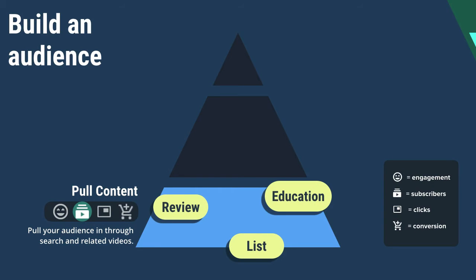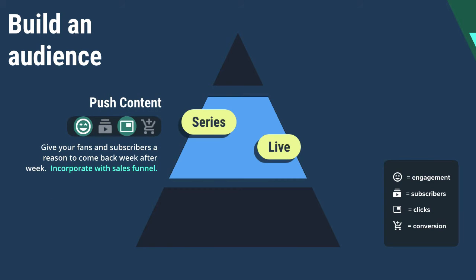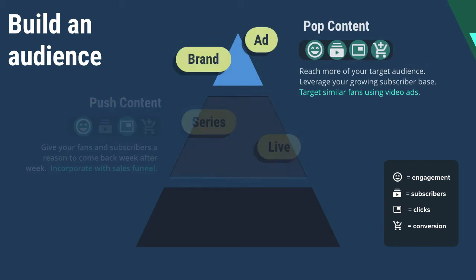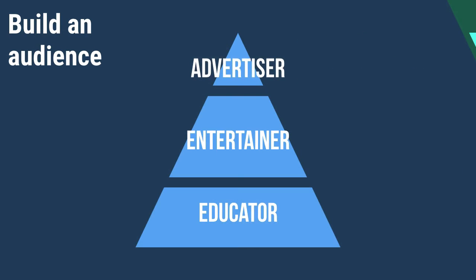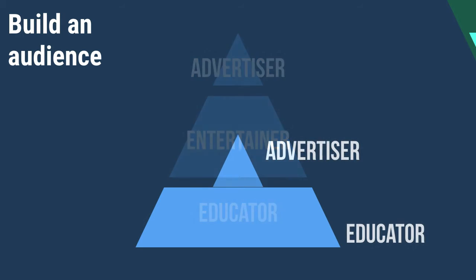I recommend brands start with a strong foundation of pull content — that's your evergreen educational content that pulls viewers in through search. Remember, YouTube is the second largest search engine after Google, and these videos act to build trust, show your expertise, and grow your subscriber base. Push videos are your regularly scheduled videos to keep subscribers engaged or to get feedback from your audience — this could be an ongoing series or live video. Pop videos are your ads and brand videos that you want to make a big splash with; they generally have higher production and promotion budgets, but you don't need a lot of them. Another easy way to remember this is acting as an advertiser, an entertainer, and an educator. If you're just getting started and have a tight budget, I would focus all my attention on the education and advertiser content and get to the entertainment content later.